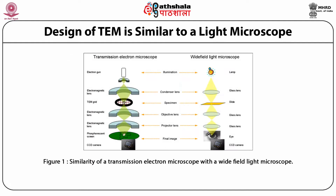The design of the Transmission Electron Microscope is similar to a light microscope. TEM uses an electron gun for illumination, which is similar to the lamp in a wide-field light microscope. Similarly, the electromagnetic lens works as a condenser lens in the transmission electron microscope, whereas the glass lens serves the same purpose in a wide-field light microscope.